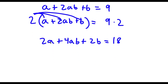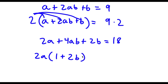Now from 2a + 4ab, I can actually factor out 2a. So now I have 2a times — well, 2a divided by 2a is 1, plus 4ab divided by 2a. 4ab divided by 2a is simply 2b. So I have 2a times (1 + 2b), and we can't forget our plus 2b at the end. This is equal to 18.